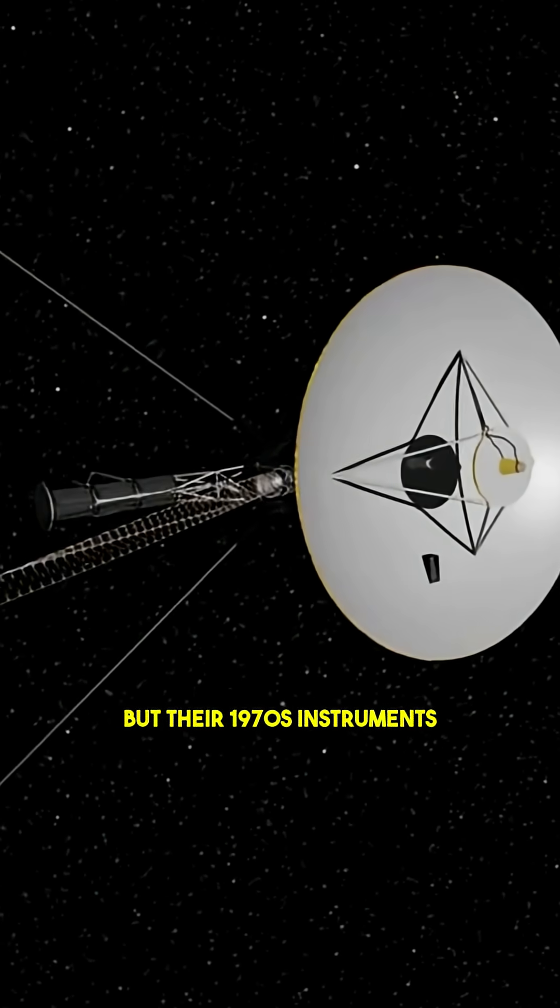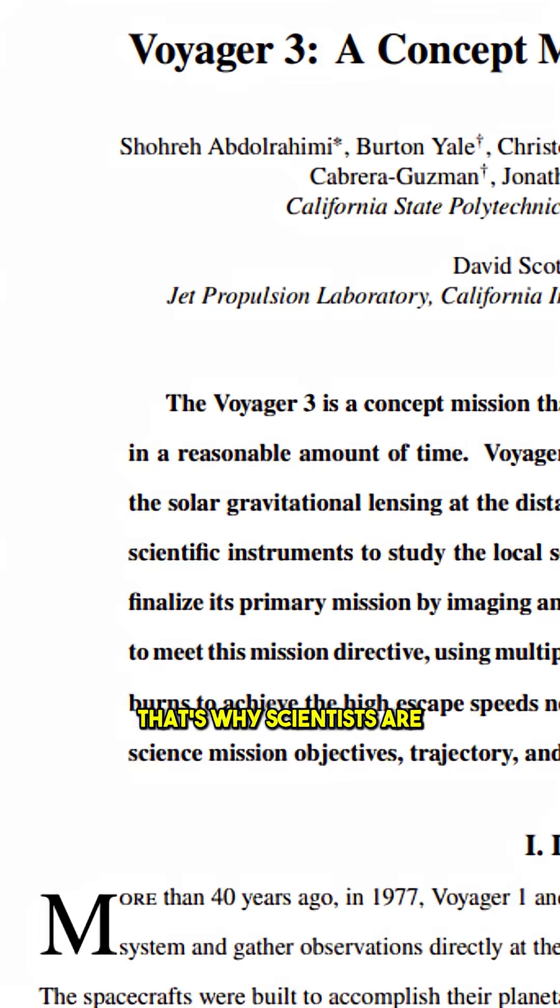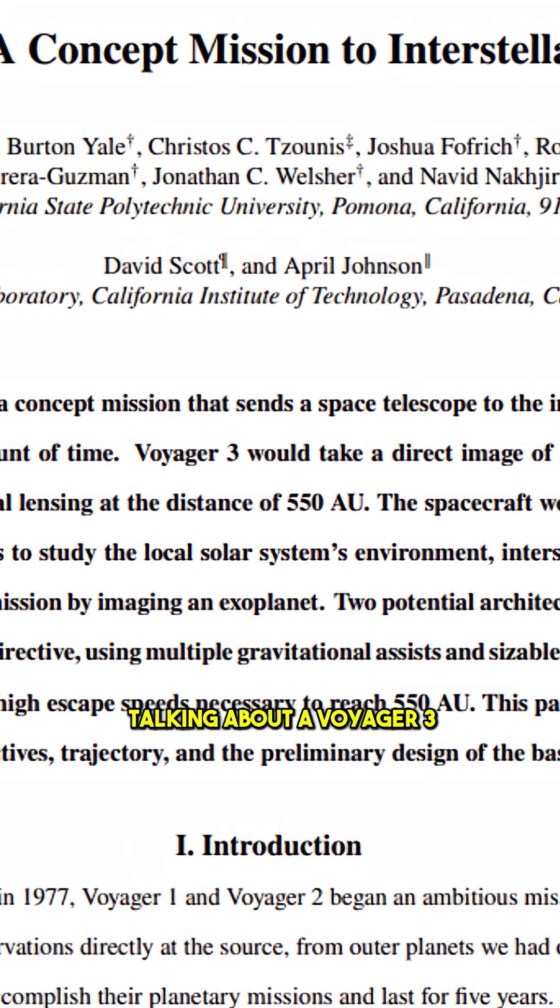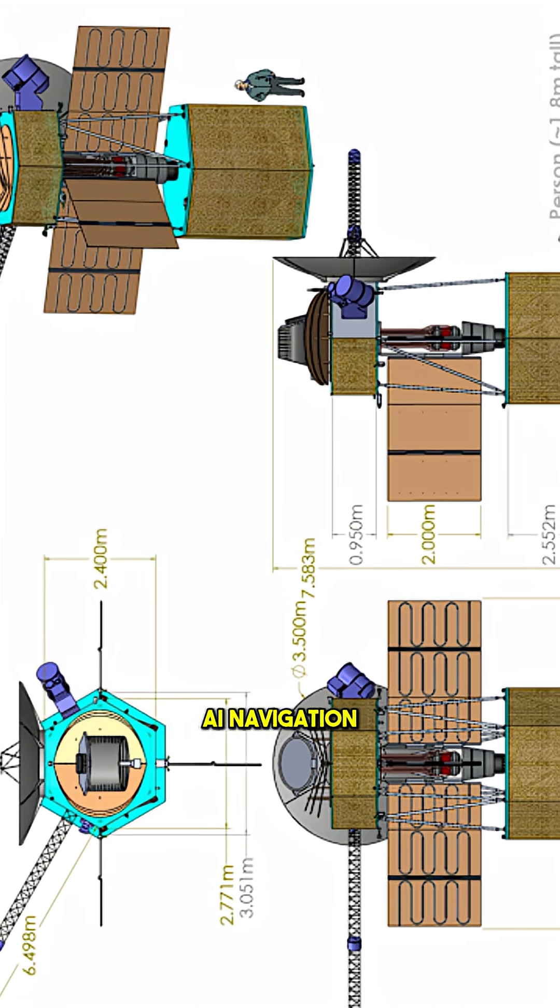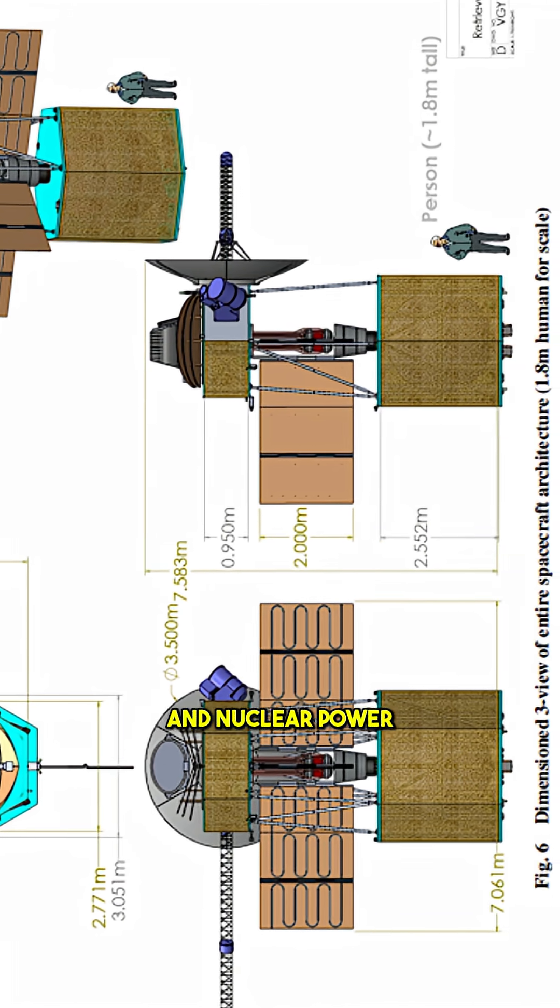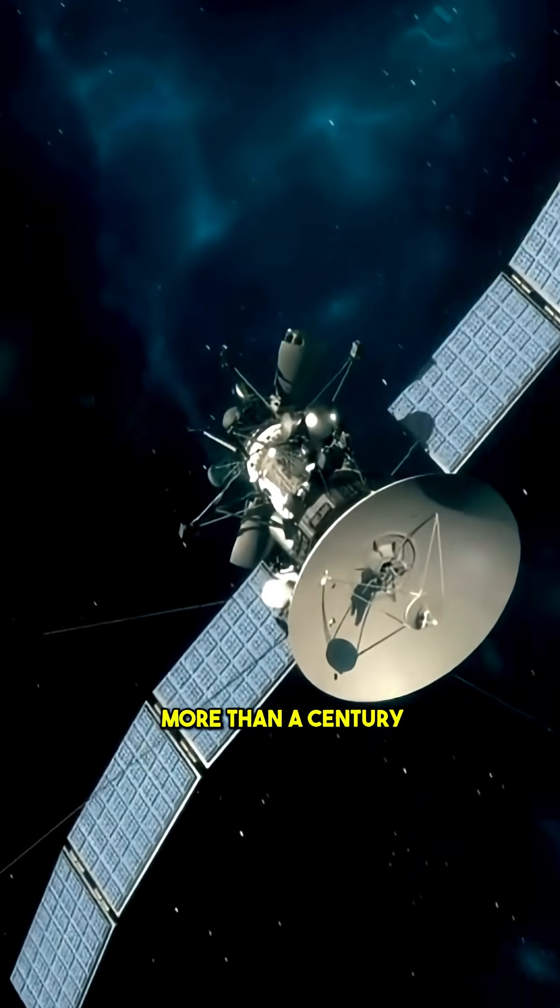But their 1970s instruments weren't built for this job. That's why scientists are talking about a Voyager 3, a modern spacecraft with advanced sensors, AI navigation, and nuclear power that could last for more than a century. Its mission,